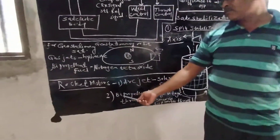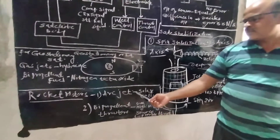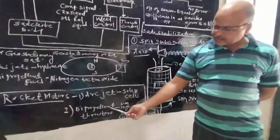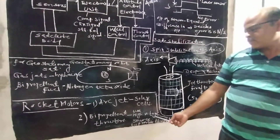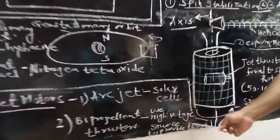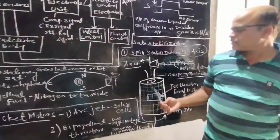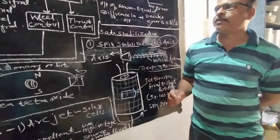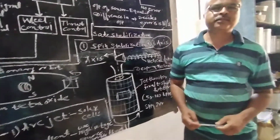These rocket motors are of two types: arc jets or ion jets, and bi-propellent thrusters. Arc jets generally use solar cells as their energy source. Bi-propellent thrusters use a high voltage source to provide thrust. As shown in this figure, this is the spin stabilization and the satellite is stabilized with the help of spin stabilization. In the next lecture, we will study the three-axis stabilization and the satellite orbit control system.